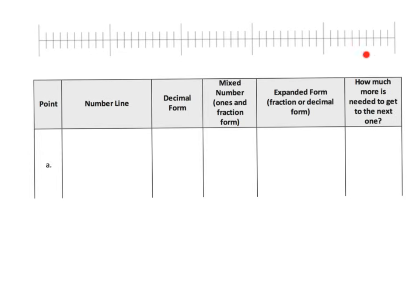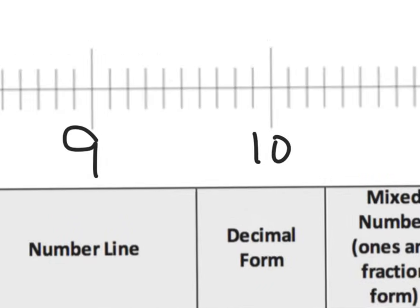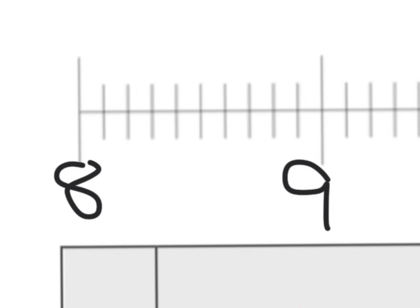As an example, let's look at a number line where the large hash marks are whole numbers — 8, 9, 10, 11, 12, and 13. Zooming in between 8 and 9, we can see it's cut into 10 pieces. Counting the intervals, there are 10 intervals between 8 and 9, so those intervals represent tenths.